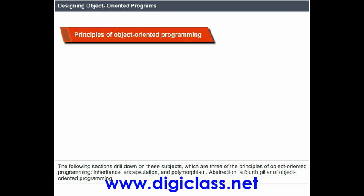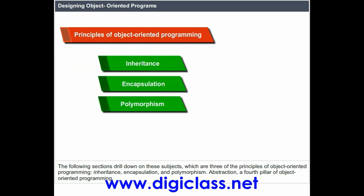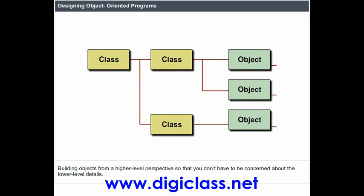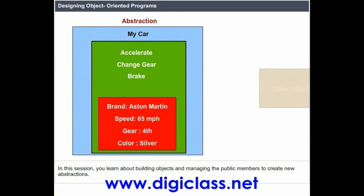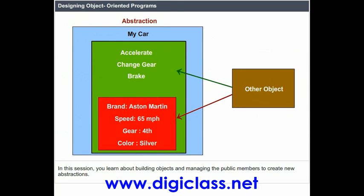Designing object-oriented programs. The following sections drill down on three of the principles of object-oriented programming: inheritance, encapsulation, and polymorphism. Abstraction is a fourth pillar of object-oriented programming — building objects from a high level perspective so that you don't have to be concerned about the lower level details. In this session, you learn about building objects and managing the public members to create new abstractions.